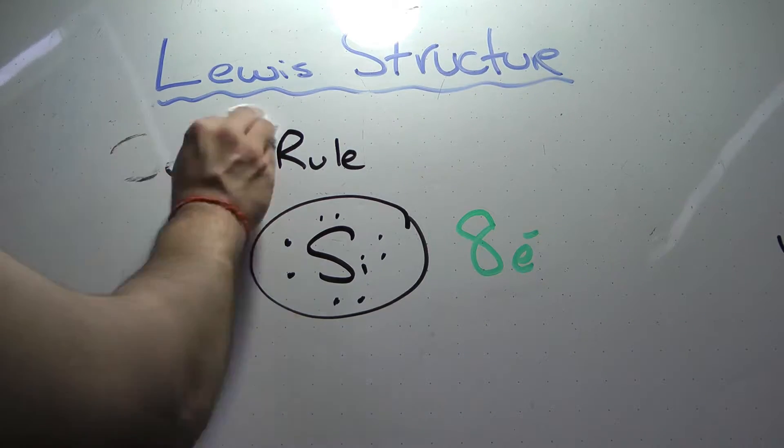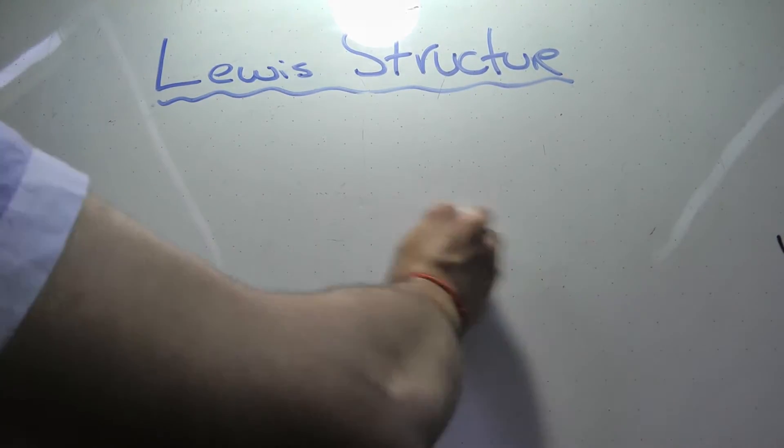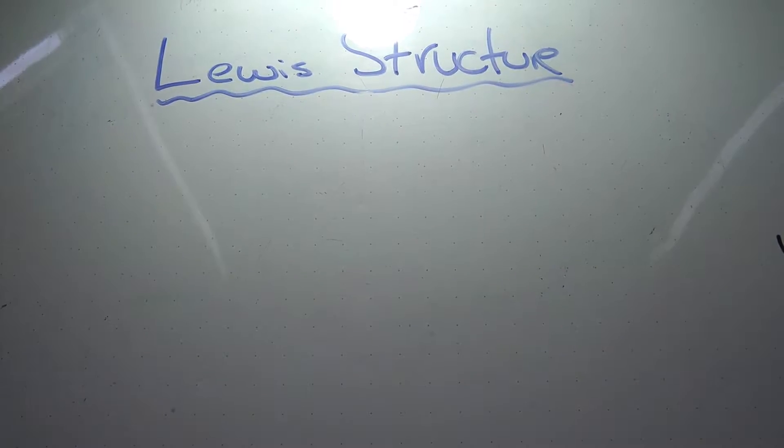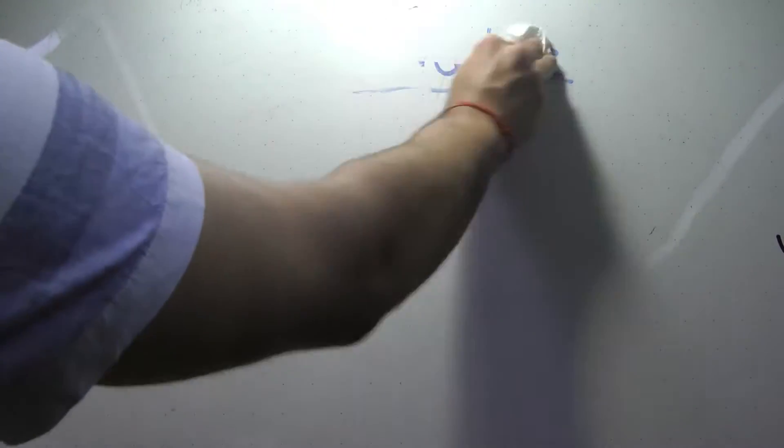Another reason we use Lewis structures is because they are really fun to draw. There are 6 basic steps to drawing Lewis structures, and 25 if you don't know how to count.